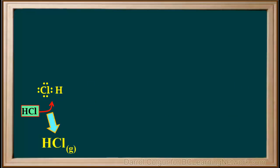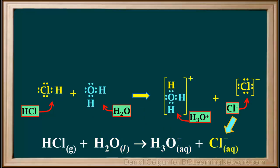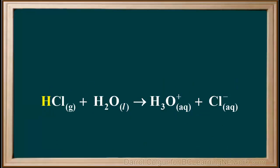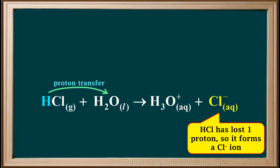We can write an equation: HCl(g) + H2O(l) → H3O+(aq) + Cl-(aq). This shows that an H+ ion, or proton, is being transferred from the HCl molecule to the water molecule — a proton transfer. H2O has gained one proton to form H3O+, and HCl has lost one proton to form Cl-.